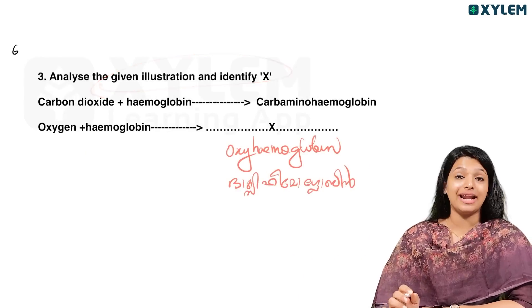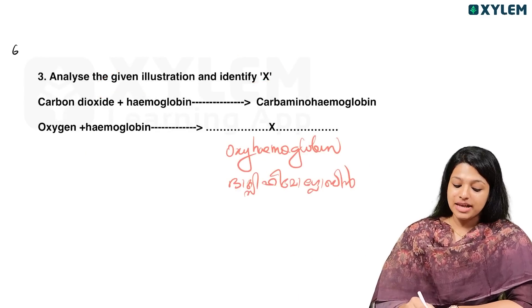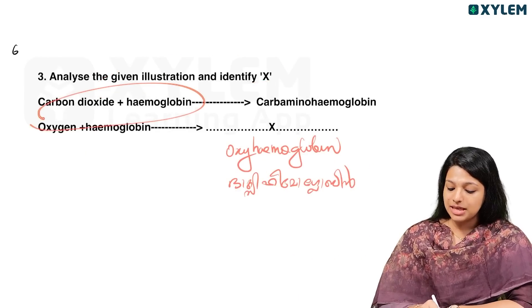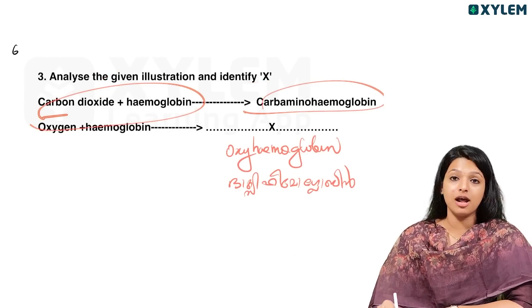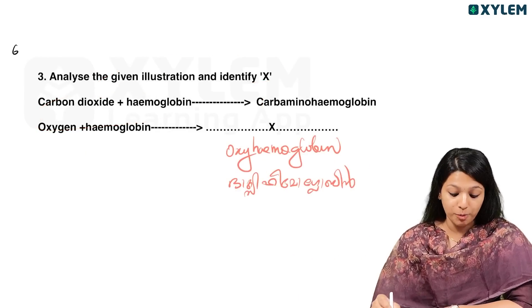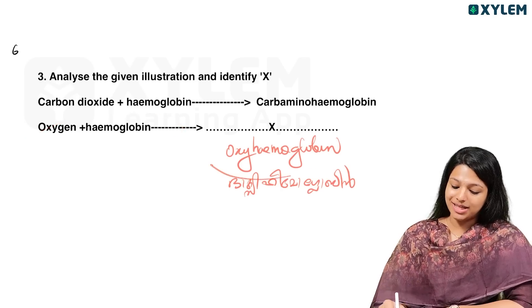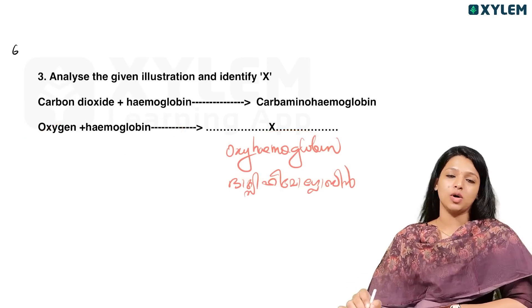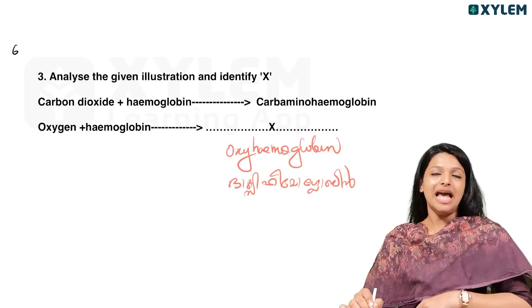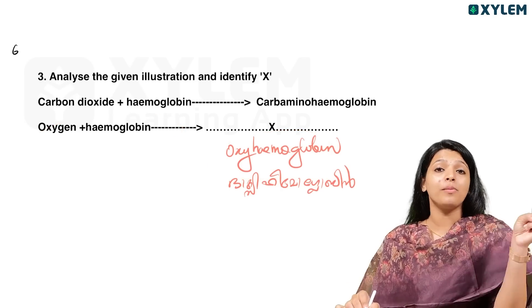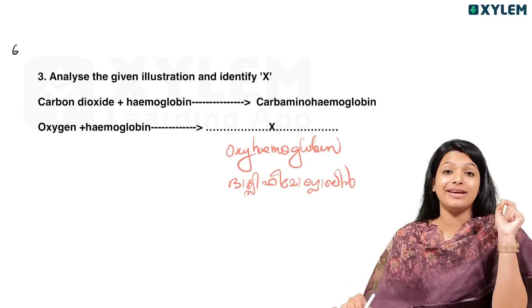Analyze the given illustration and identify X. Carbon dioxide plus Hemoglobin forms Carbaminohemoglobin. Oxygen plus Hemoglobin forms Oxyhemoglobin. Note that these two compounds are to be filled in.